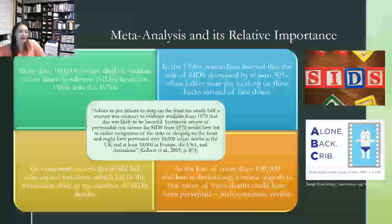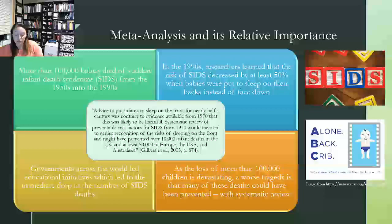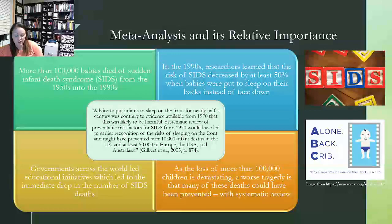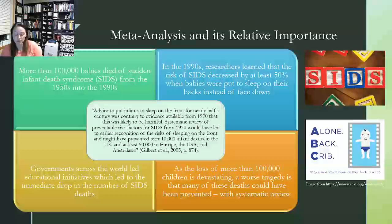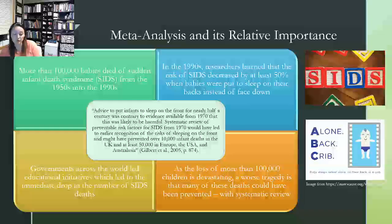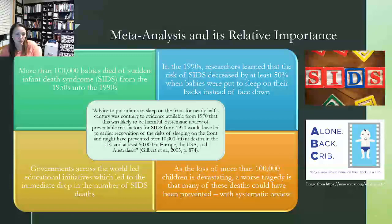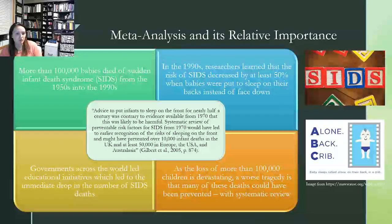And that led to an immediate drop in the number of SIDS deaths that we were seeing. And so while more than 100,000 children lost is absolutely devastating, the worst tragedy is that many of these deaths could actually have been prevented with the use of systematic review. Advice to put infants to sleep on the front for nearly half a century was contrary to evidence available from 1970.